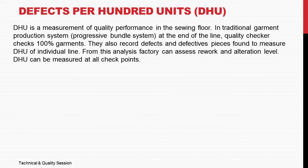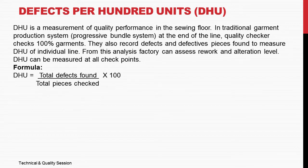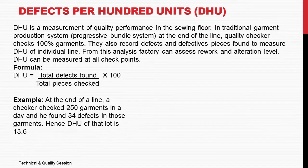From this analysis, the factory can assess rework and alteration levels. DHU can be measured at all checkpoints. The formula is: DHU equals total defects found multiplied by 100, divided by total pieces checked. For example, at the end of a line, a checker checked 250 garments in a day and found 34 defects. Hence, the DHU of that lot is 13.6.